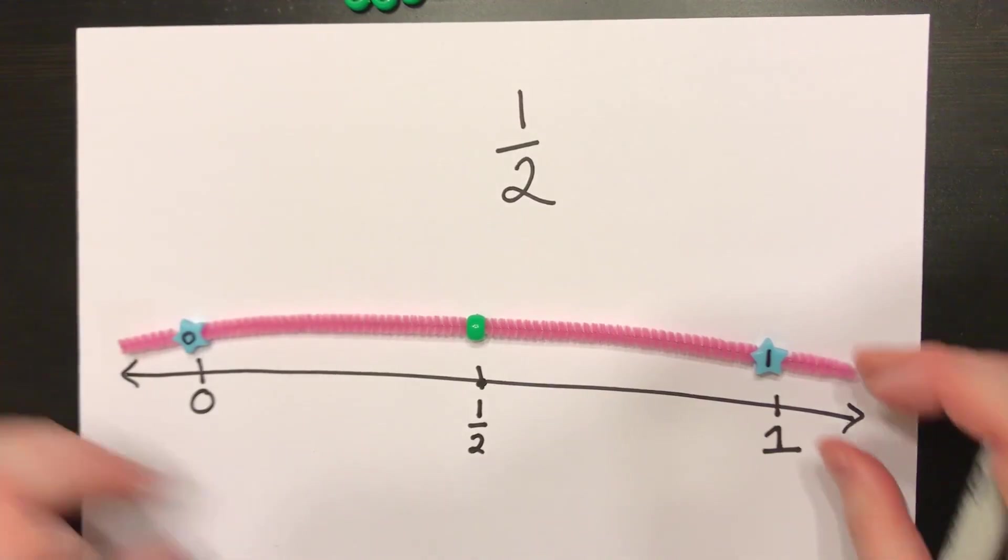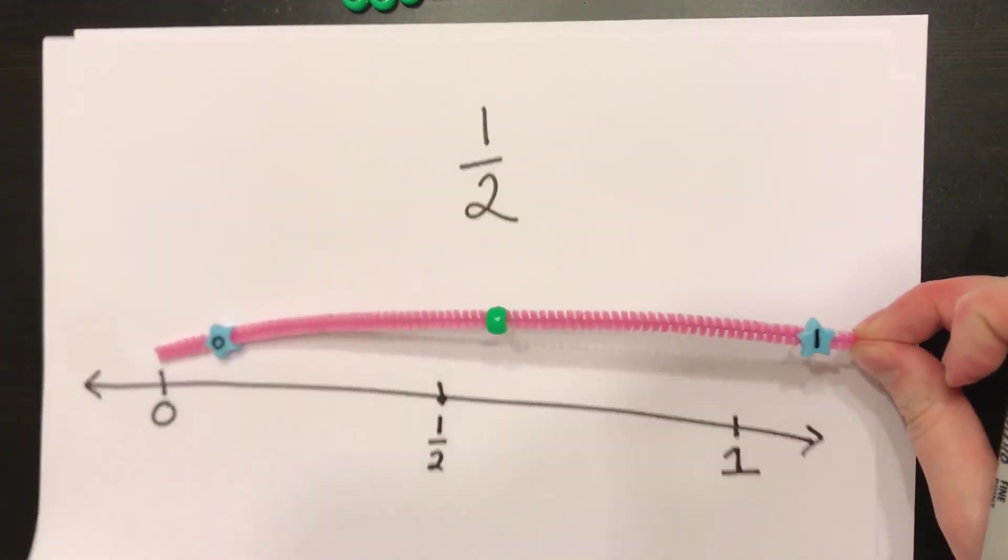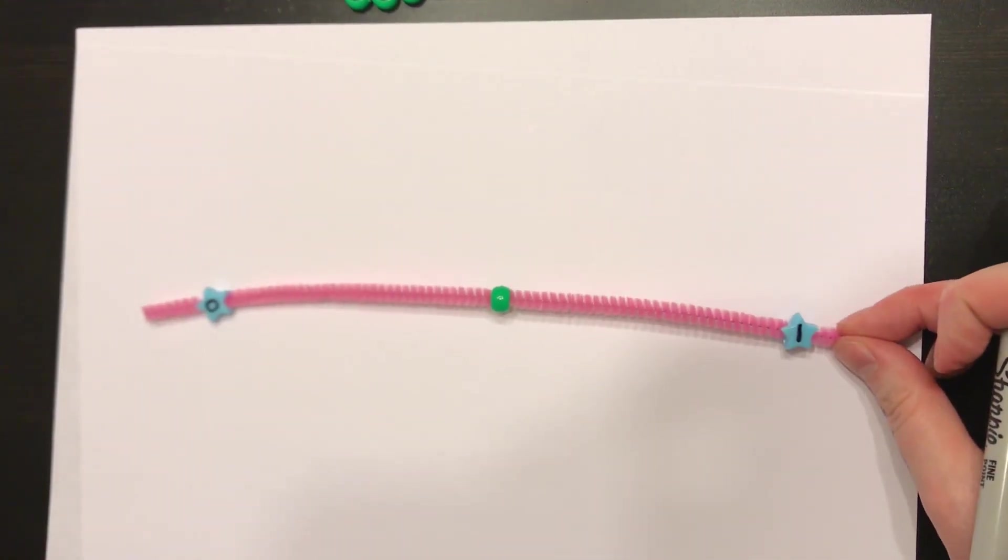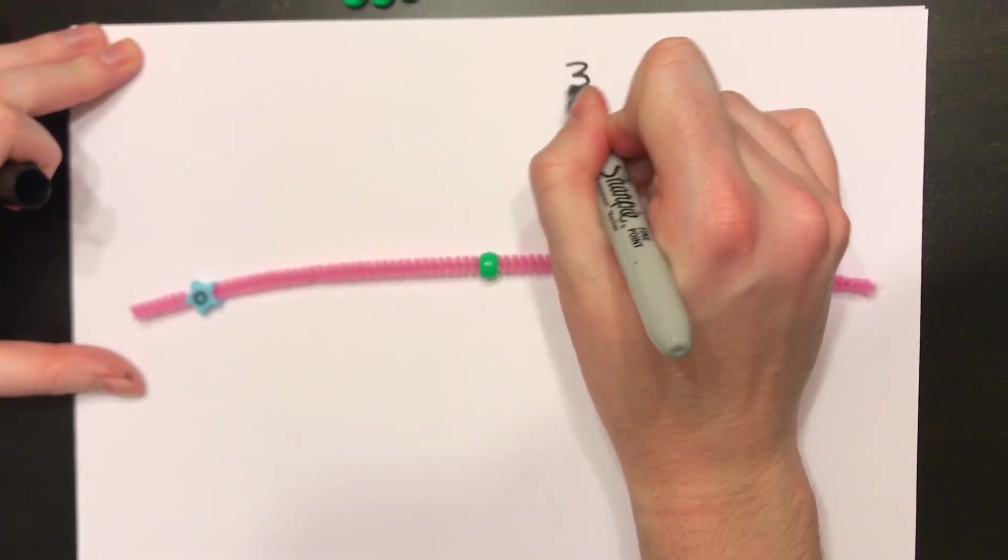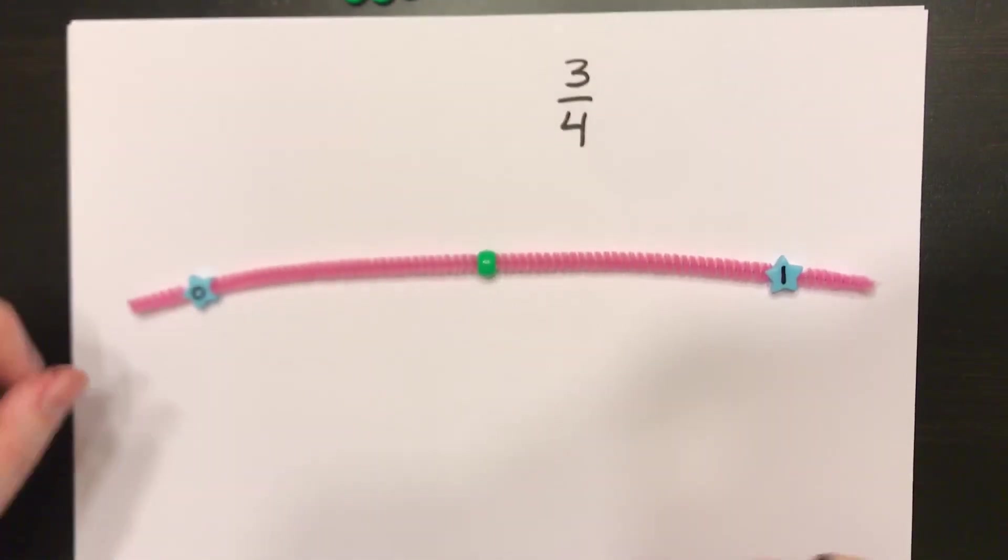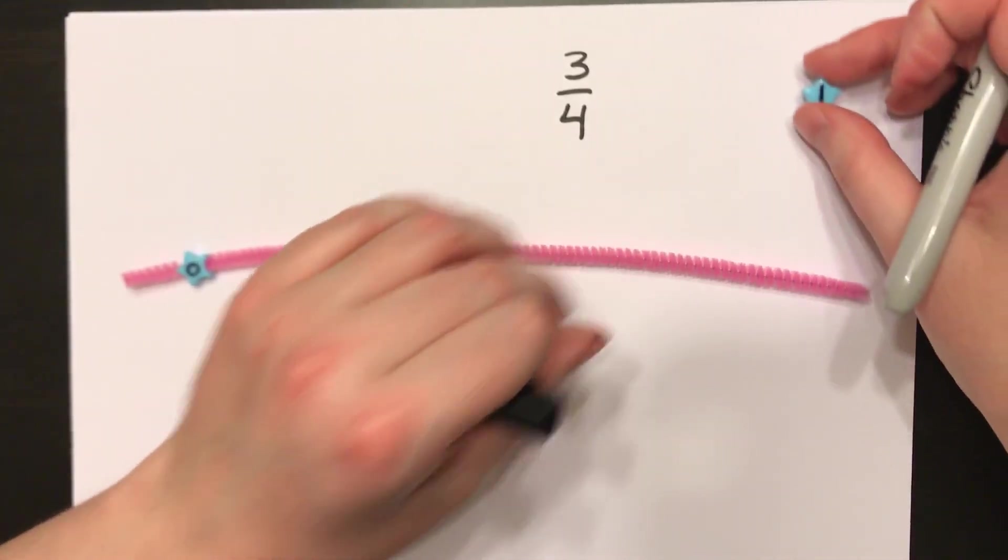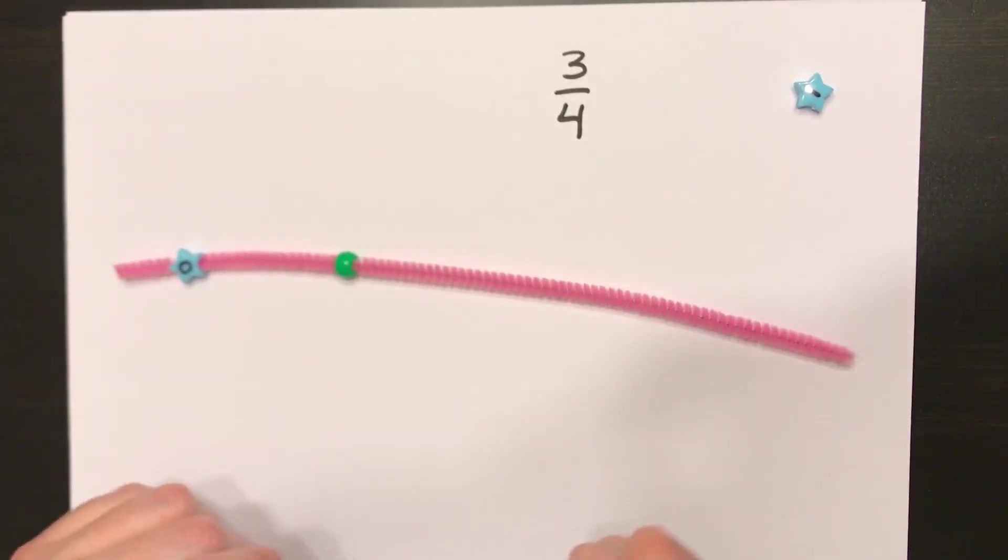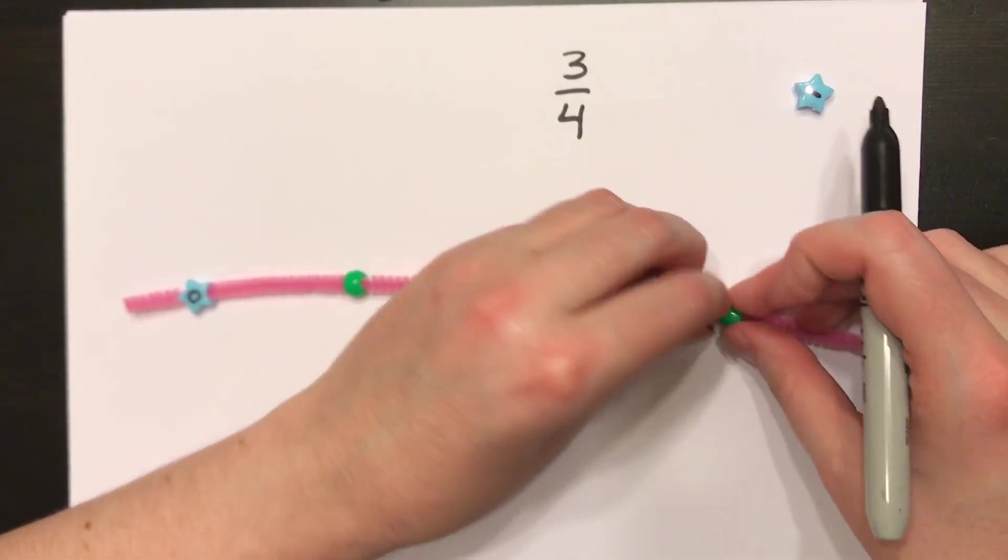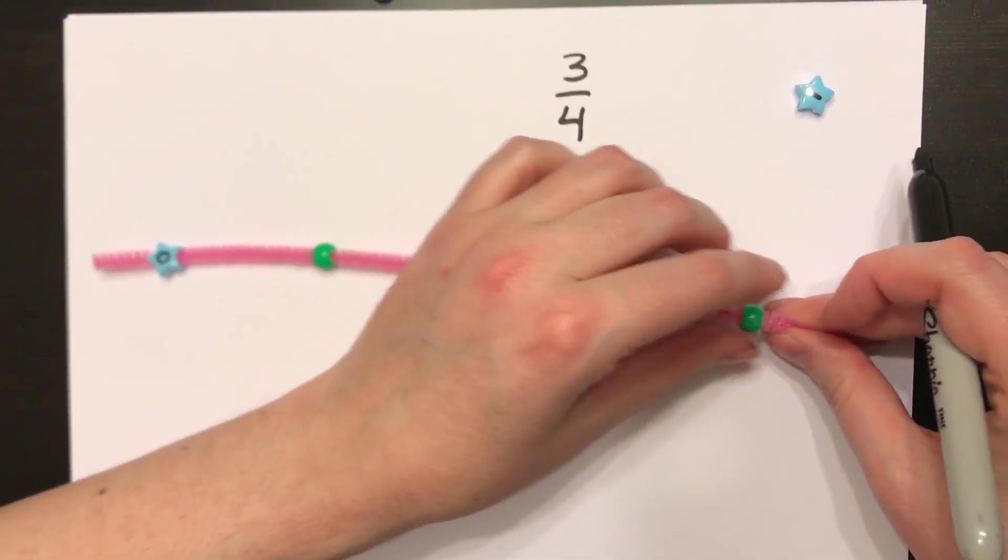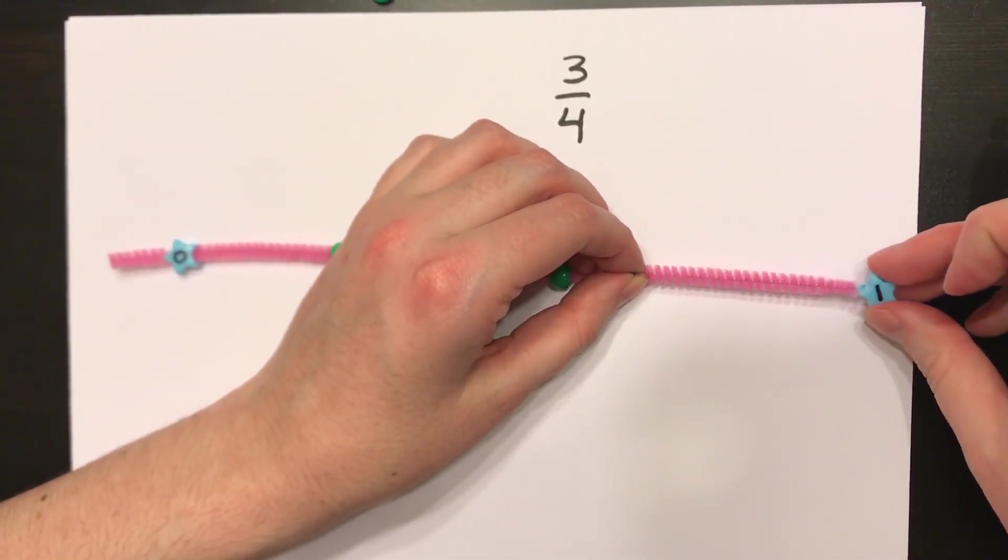Let's give it a try and do another one. So let's say I gave you the problem and I wanted to find 3 fourths on a number line. Well, I would take off my whole bead, add more beads to this to break it into four equal parts. So I'm going to add two more beads to break it into four equal parts, and finish with my 1 bead.